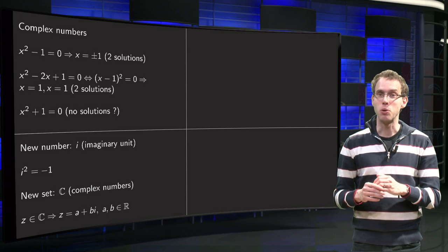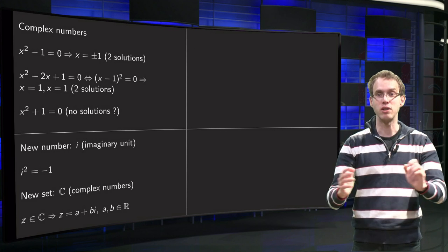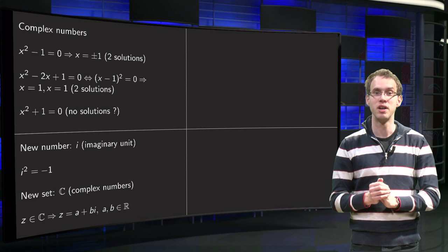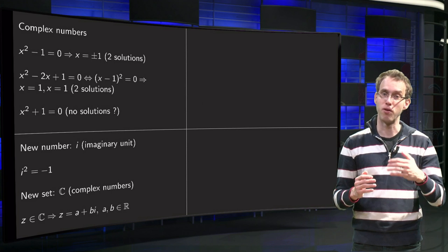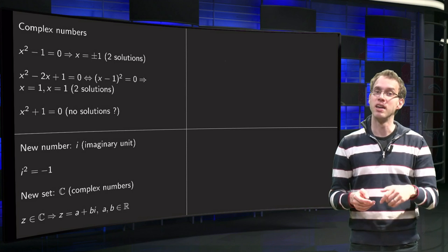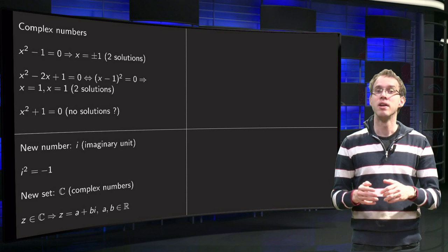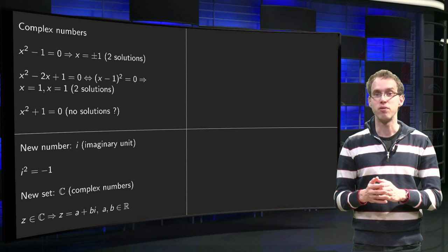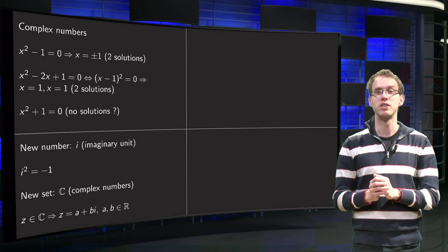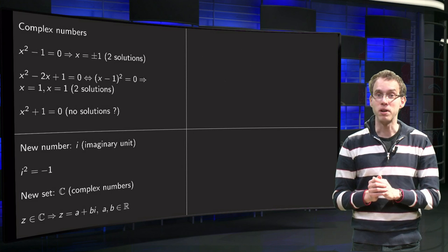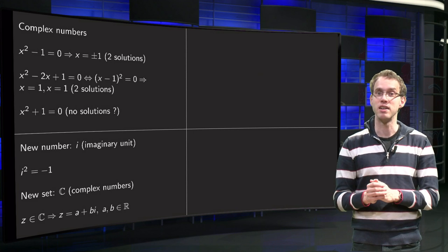And using this one number we can form a whole set, a whole bunch of new numbers. We form numbers of the form a plus b times i, where a and b are both real, and we call the set, which contains all those new numbers, the set of complex numbers designated by the letter C.